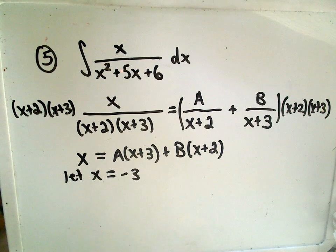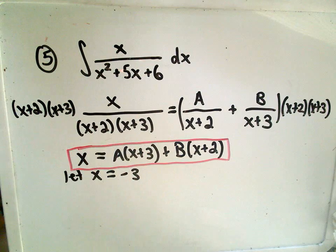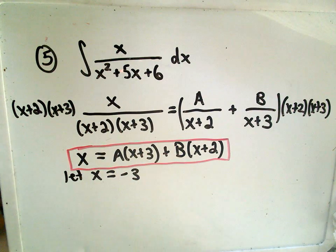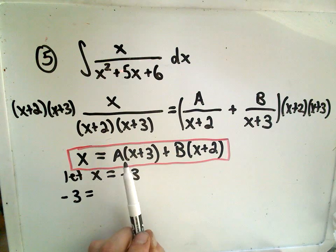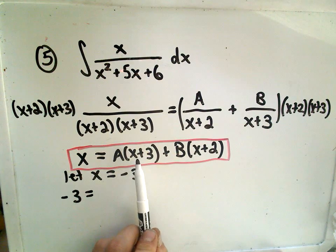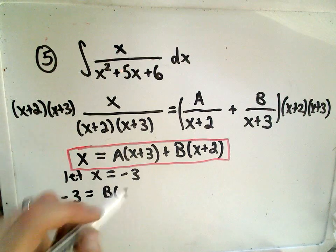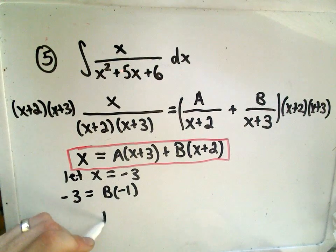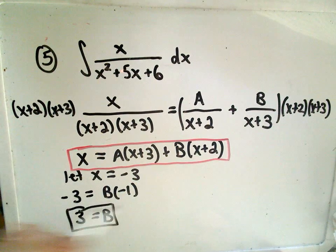Notice if I let x equal negative 3. I have to plug it in everywhere on my equation. So if I plug in negative 3, I'll get negative 3 on the left. Notice if I plug negative 3 into the first part, I'll get A times 0, so that just cancels out. And then we'll get B times negative 3 plus 2, or negative 1. That tells us then that B equals positive 3.